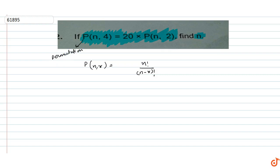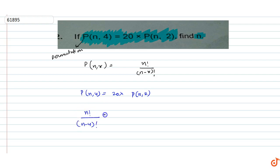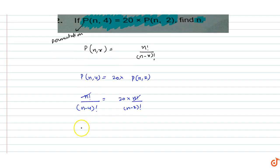We are given P(n, 4) equals 20 into P(n, 2), that is n factorial upon (n minus 4) factorial equals 20 into n factorial upon (n minus 2) factorial. The n factorials cancel out and we get (n minus 2) factorial equals 20 into (n minus 4) factorial.